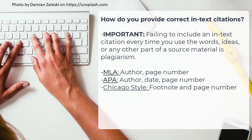In-text citations provide just enough information with every piece of source material to tell your reader that you found the material in a source and which source on the bibliography it came from. The in-text citation allows your reader to refer to the right source on the bibliography for the full source information. It is essential that you include an in-text citation every time you use the words, ideas, or any other part of a source in a paper, speech, or other project. As with the bibliography, there is a difference in how in-text citations are provided in MLA, APA, and Chicago style.